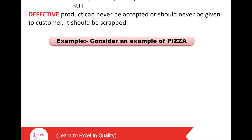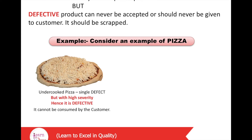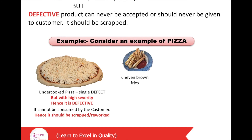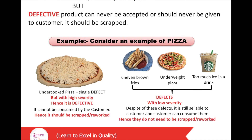Consider an example of pizza. An undercooked pizza cannot be consumed by the customer, so it should be scrapped or recalled. Undercooked pizza is a single defect but with high severity, so it falls under the category of defective. Whereas other defects like uneven browning, underweight pizza, or too much ice in a drink have a flaw but can still be sold and consumed. Hence these defects are not severe and do not need to be scrapped, so they are not defective.